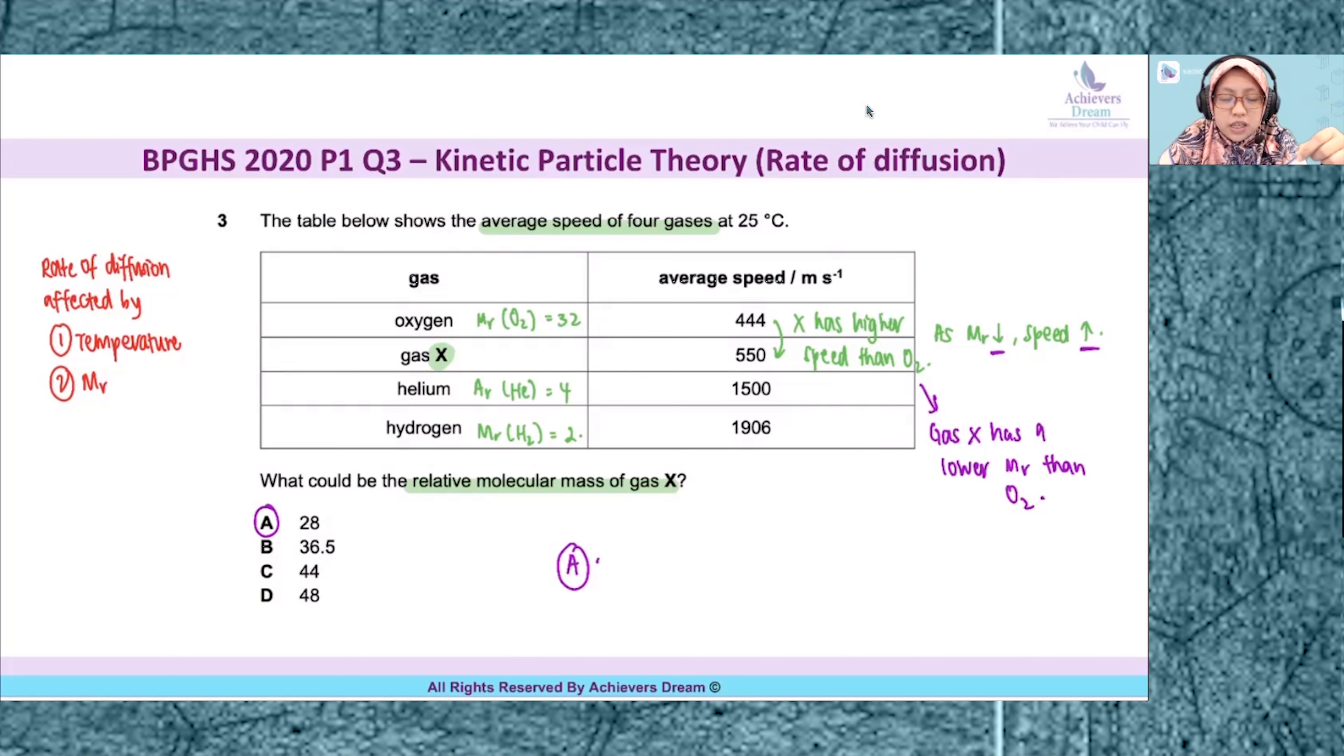However, let's say you have a smaller option, you need to compare it further with helium. You realize that helium has a much higher average speed, which means helium has a lower mass than X.